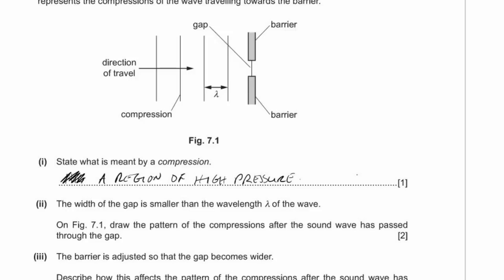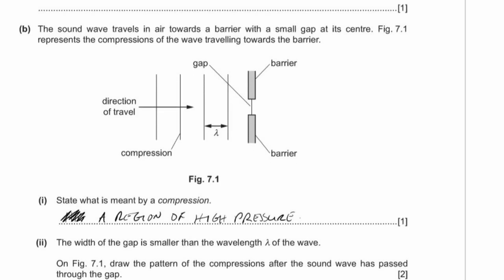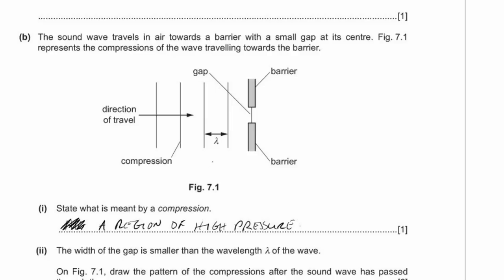Draw the pattern of compressions after the sound wave passes through the gap. The wave will spread out in a semicircular shape after passing through. The key is keeping the spacing between compressions the same — equal to the wavelength. Always draw at least three compressions, as there's always a mark for drawing three of them.